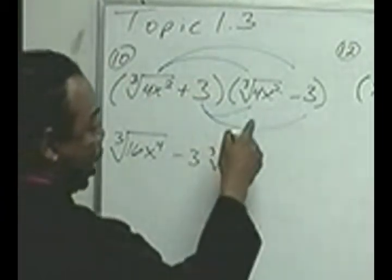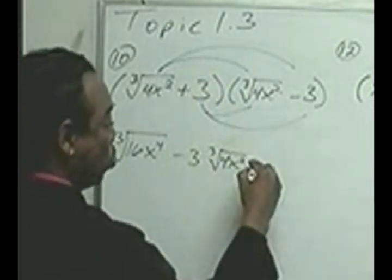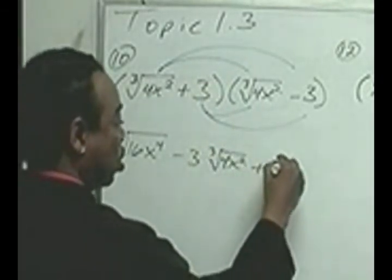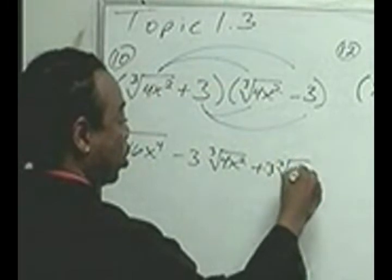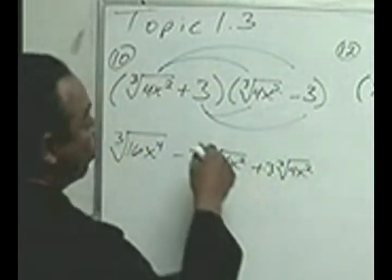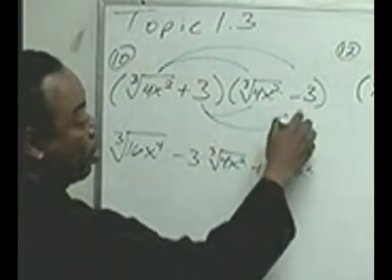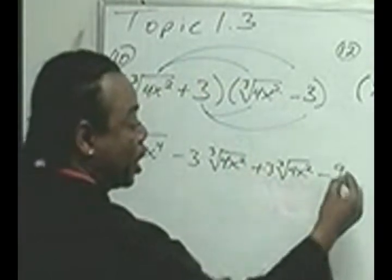On the inside, we have 3 times the cube root of 4x squared, which is positive 3 third root of 4x squared. And then finally, we have positive 3 times negative 3, which will be a negative 9.